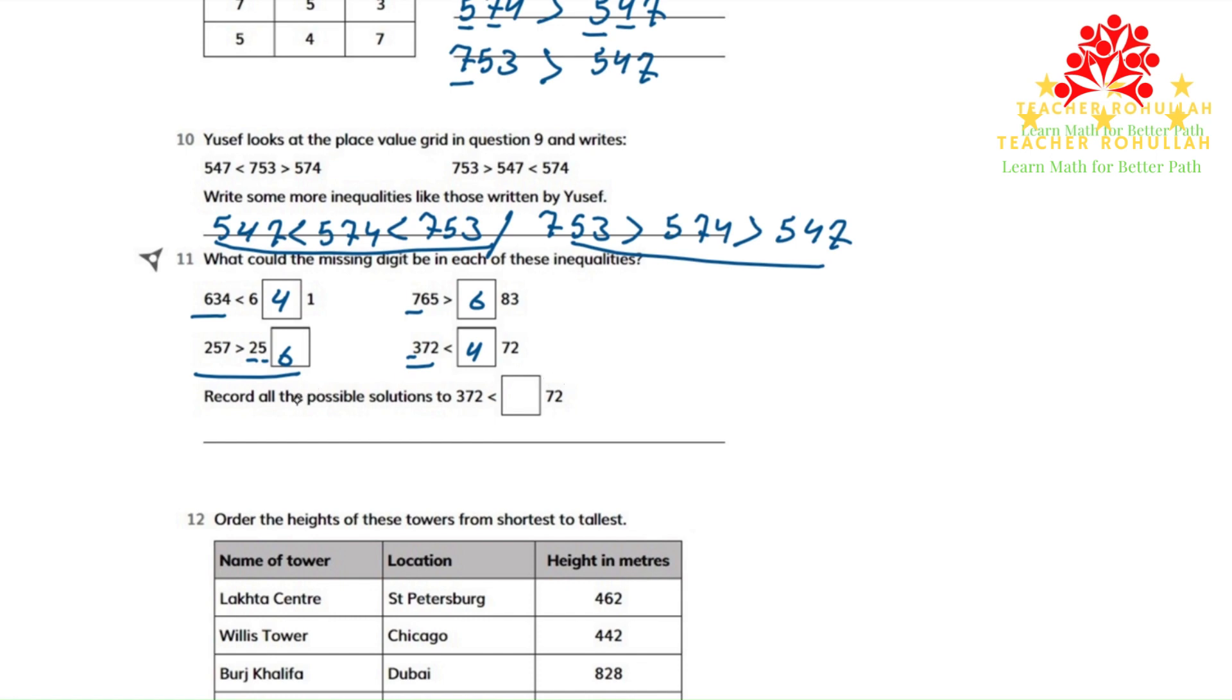In the other part, it says record all the possible solutions to 372 less than a number over here in which the hundreds place is missing.